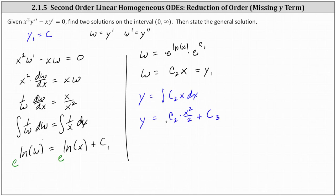This actually is the general solution to the differential equation. We can let c sub two divided by two equal a constant, let's say c sub four, and write the general solution as y of x equals c sub four x squared plus c sub three. So this is the general solution.